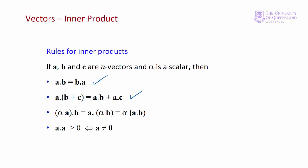And if alpha is a scalar, if we multiply vector A by a scalar first, or B by the scalar first, or if we take the dot product then multiply by the scalar, we end up with the same result.